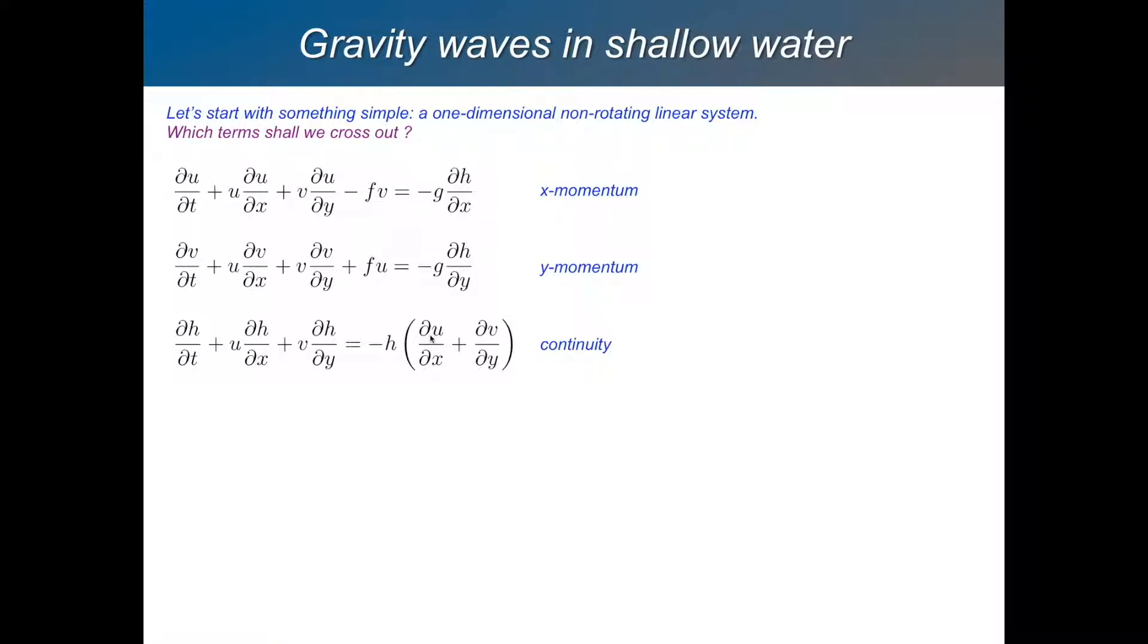And what we want to do is try the simplest thing we can do for a wave analysis of these equations. So what we want to do is one-dimensional, non-rotating, linear system. So that means we've got to cross some terms out. So which of these terms do you think we should cross out?